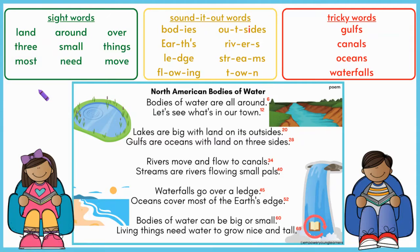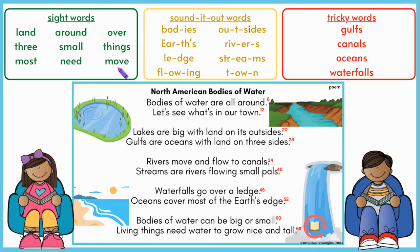First let's read the green sight words. Read with me. Land, three, most, around, small, need, over, things, move.